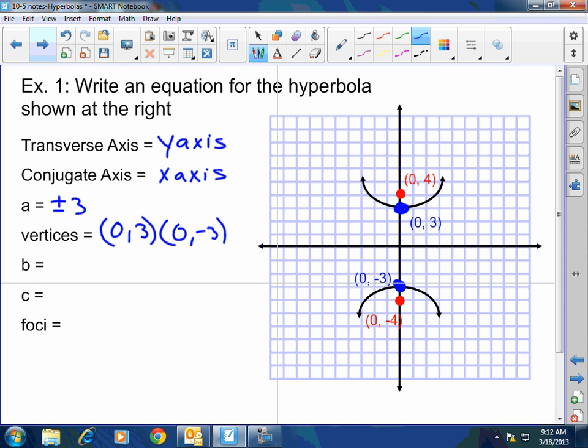My b, I don't know yet. My c, though, I do know. My c is plus or minus 4. Very good. And my foci is going to be (0,4) and (0,-4). Remember, the foci always is on the axis of the transverse or the major. It's always with the vertices. They're always on the same axis.